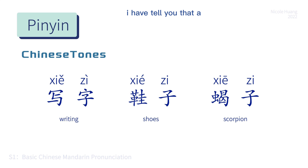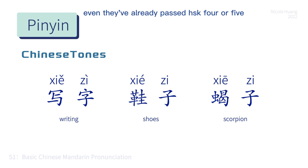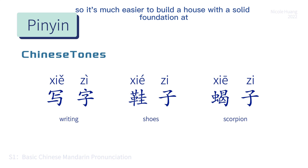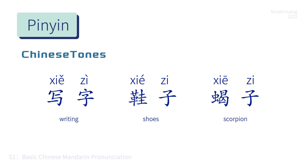I have to tell you that a lot of Chinese students are struggling with tones even after they've already passed HSK 4 or 5, because they didn't pay much attention to this at the beginning. It's much easier to build a house with a solid foundation in the first place. But don't be afraid — I'll be with you to help you out.